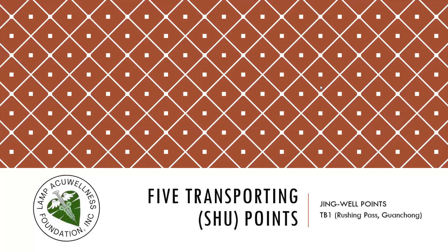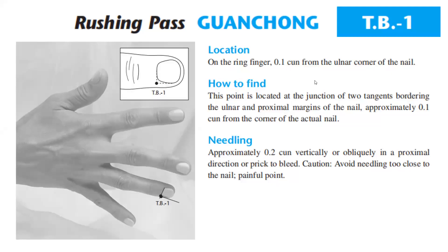We go to the five transporting points, jingwell points. TB1, Rushing Pass. Location on the fingers, 0.1 cun from the ulnar corner of the nail. How to find TB1? This point is located at the junction of the two tangents bordering the ulnar and proximal margins of the nail, approximately 0.1 cun from the corner of the actual nail.